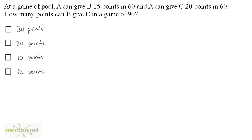At a game of pool, A can give B 15 points in 60 and A can give C 20 points in 60. How many points can B give C in a game of 90? A can give B 15 points in a game of 60, meaning the game is of 60 points. If A is at 60, B is 15 behind, so B has 60 minus 15, which is 45 points. A can give C 20 points in 60, so C has 60 minus 20, which is 40 points. We now have all the values for A, B, and C.